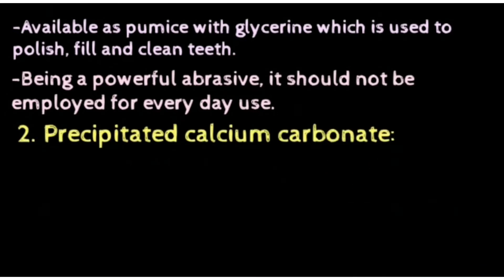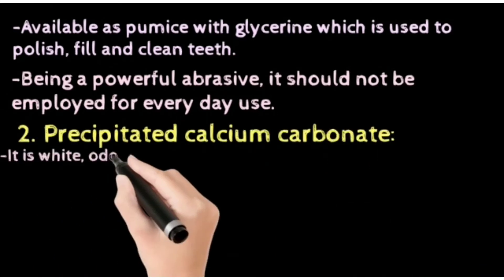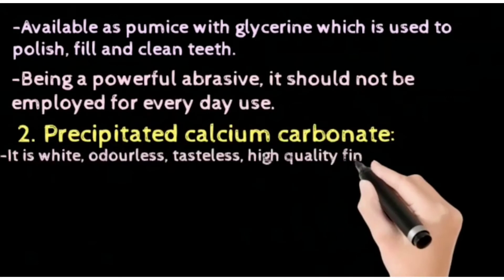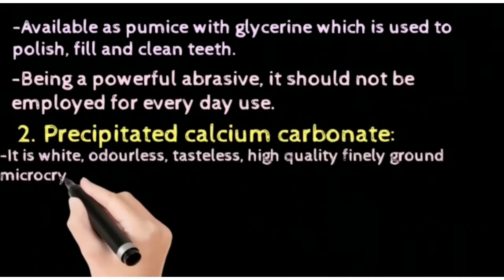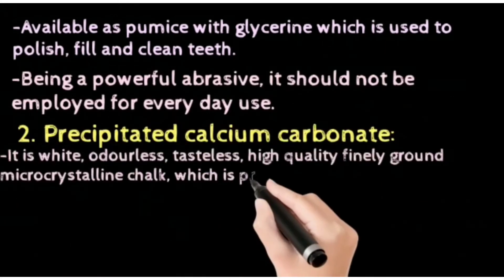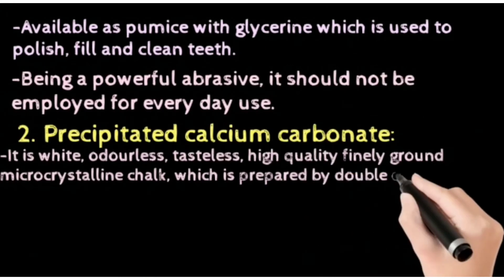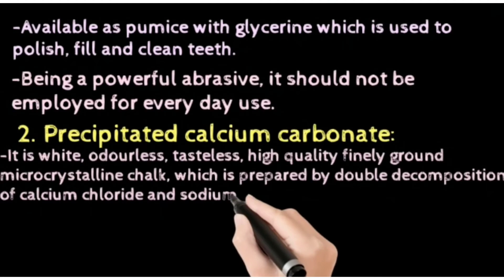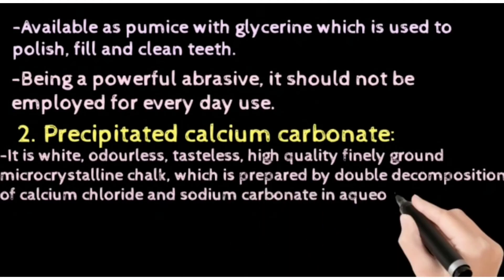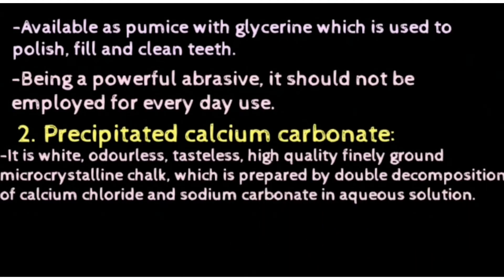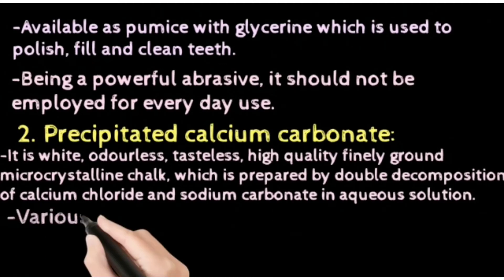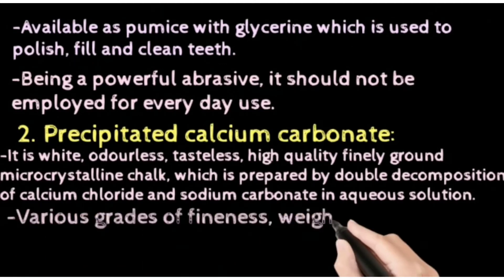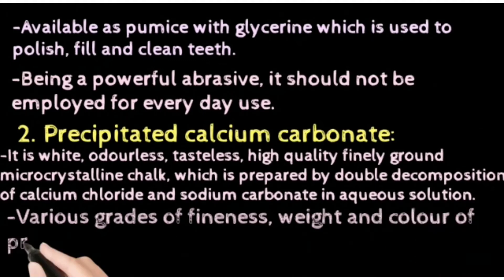Precipitated calcium carbonate is white, tasteless, and odorless. It is a very high quality finely ground microcrystalline chalk, which is prepared by double decomposition of calcium chloride and sodium carbonate in aqueous solution. Various grades of fineness, weight, and color of precipitated calcium carbonate depend on the process of manufacture.